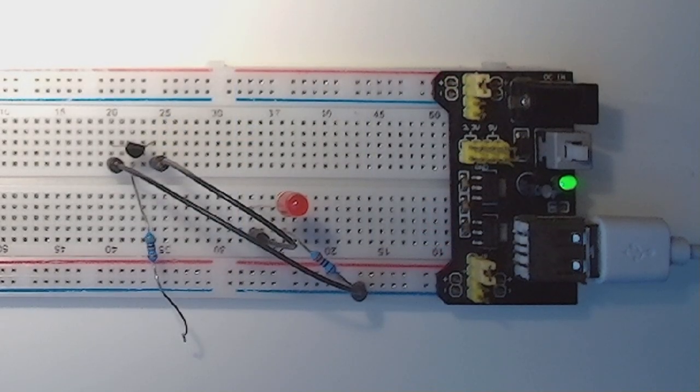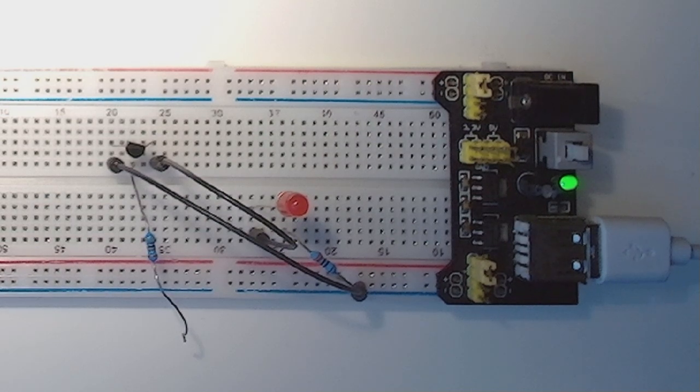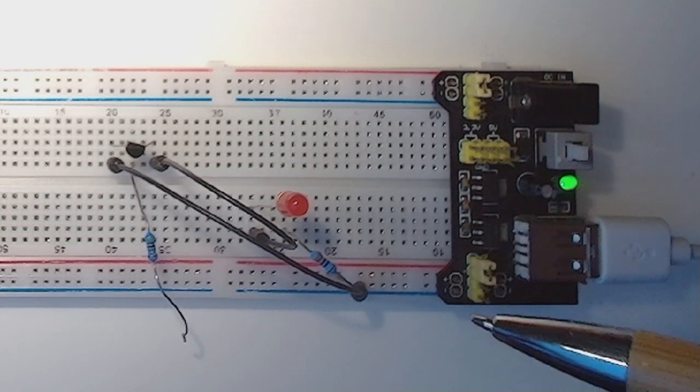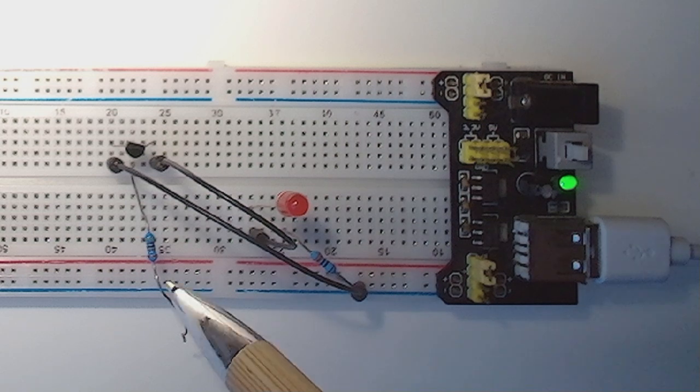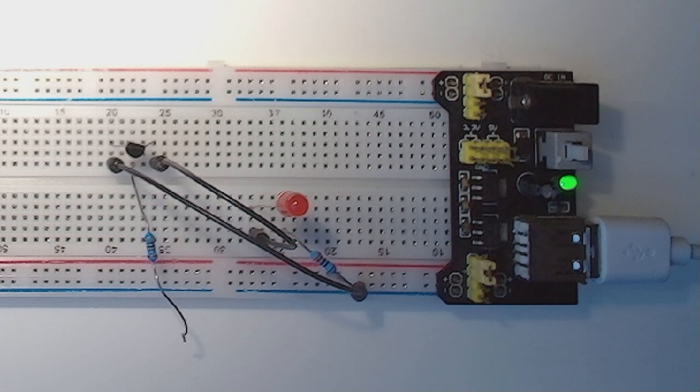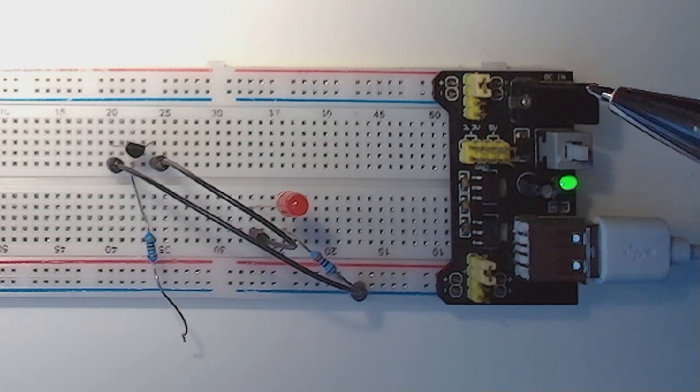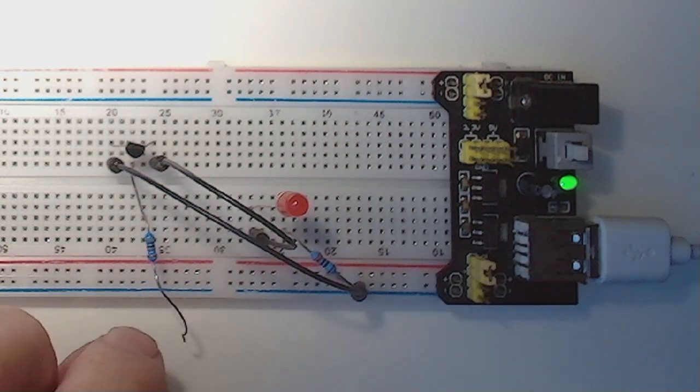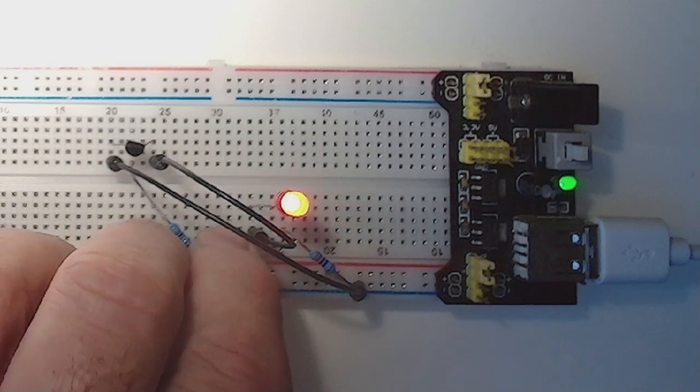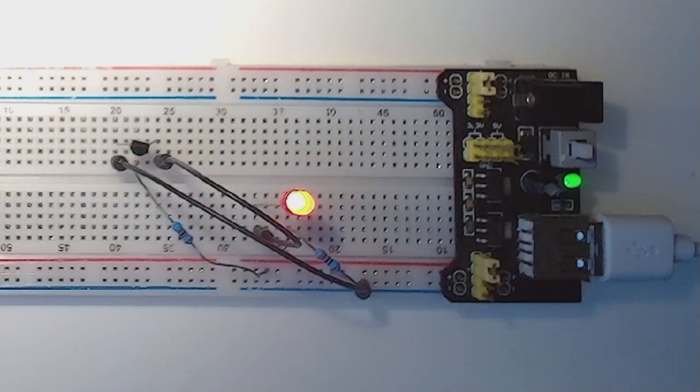So here we have the situation on the breadboard with our LED and our 330 ohm resistor. Here's our 4.7k resistor. Here we have our transistor with the resistor on the base. So if I apply a small current to the base, it should turn the LED on. And it does.